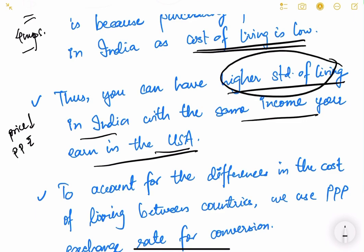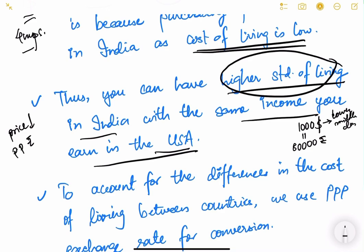Because price levels are lower in India, the purchasing power of the rupee is greater than that of the dollar. For example, with $1,000 (equivalent to ₹80,000), you might live a lower-middle-class life in the USA, but with ₹80,000 in India you can live a better standard of life. The same income provides higher welfare in a lower-cost country.